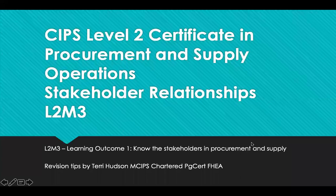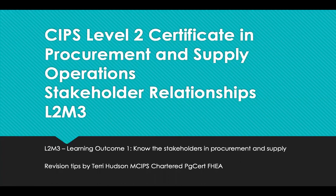Hello and welcome to CIPS Level 2 Certificate in Procurement and Supply Operations Revision Tips. This is for Module 3: Stakeholder Relationships. I'm going to cover Learning Outcome 1, which is to know the stakeholders in procurement and supply.